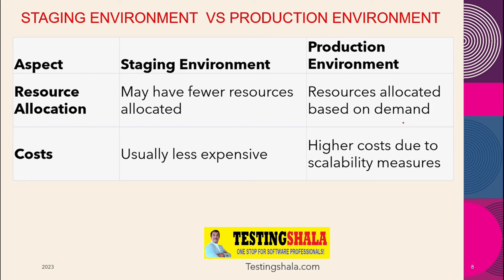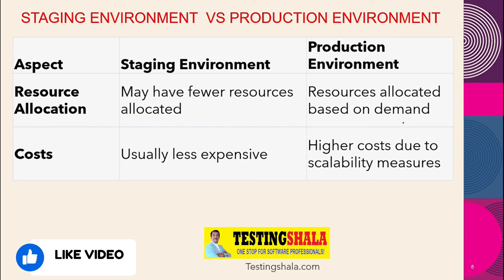The next key difference is resource allocation. In staging, we may not get many resources allocated — like higher CPU or higher-capacity RDS instances. But in production, we keep as many resources as possible, scaling based on demand. From a cost perspective, staging will be somewhat expensive, but production will have a higher cost due to scalability measures.